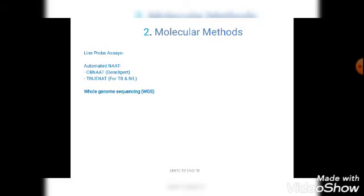We have certain techniques which can diagnose tuberculosis as well as drug resistance in tuberculosis very soon. These techniques include line probe assay and automated NAT systems. The automated NAT system includes CB NAT and TRUE NAT. CB NAT is cartridge-based nucleic acid amplification technique, also called GeneXpert. TRUE NAT is also for the diagnosis of tuberculosis and detection of resistance to rifampicin, and TRUE NAT is developed in India. The third technique is whole genome sequencing.